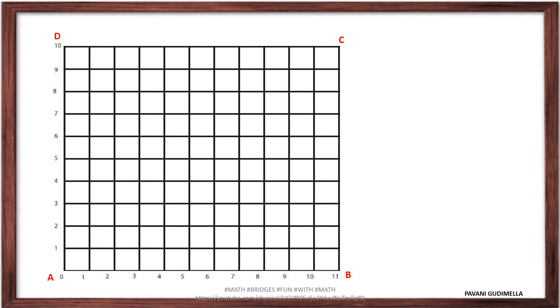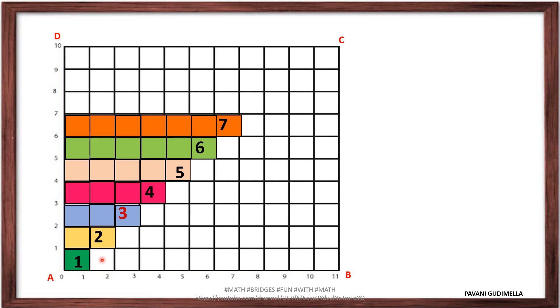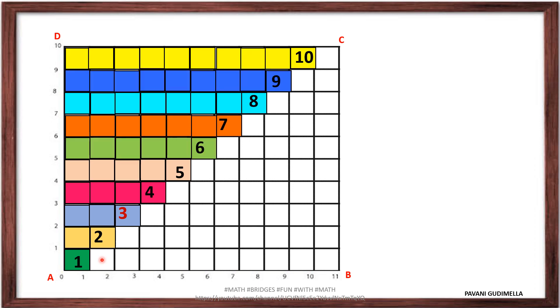Now you can take a crayon or a color pencil and start coloring. The first box, one box we have colored, so it's one square centimeter. Write it as one. Next color two boxes and take it as two, three boxes and take it as three. Similarly, next one four, five, six, seven, eight, nine, and ten. Color all these boxes like this.